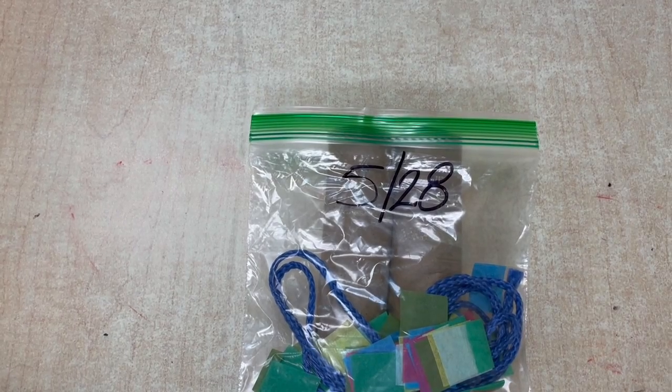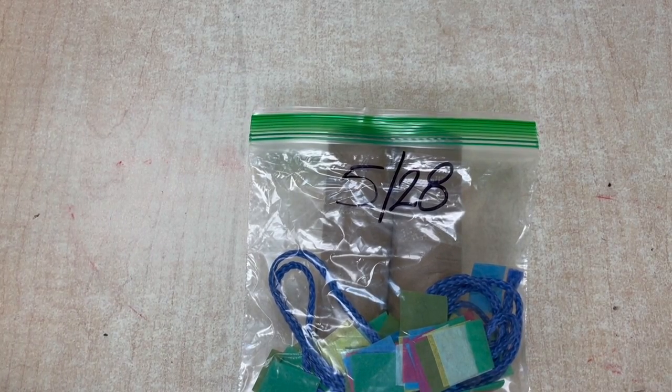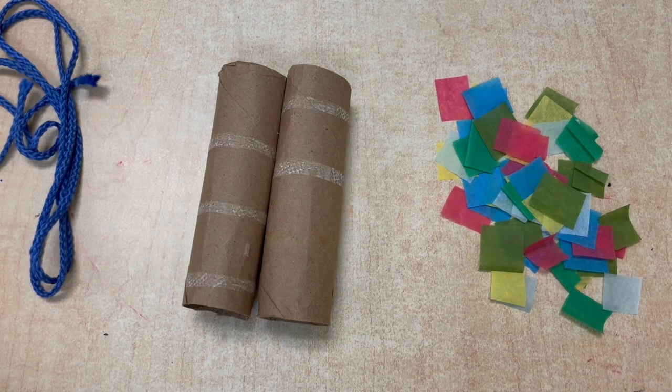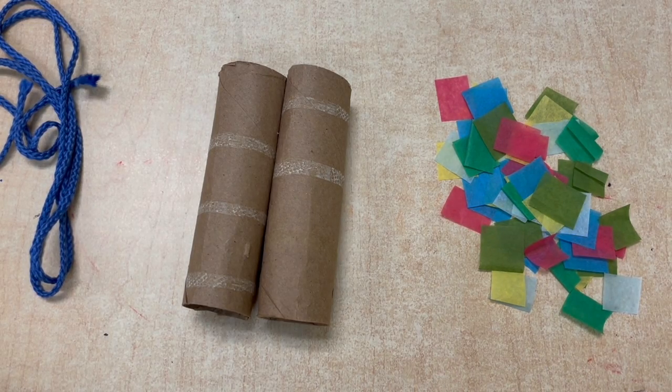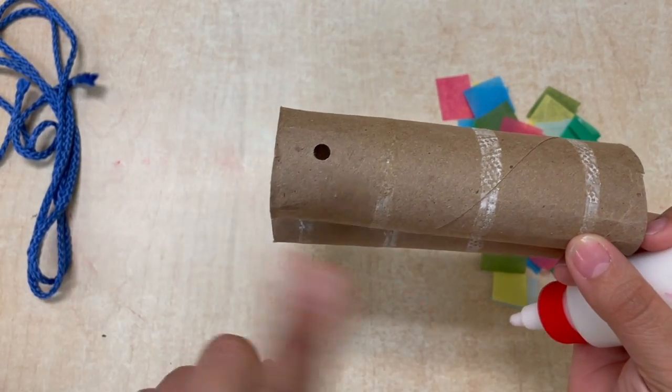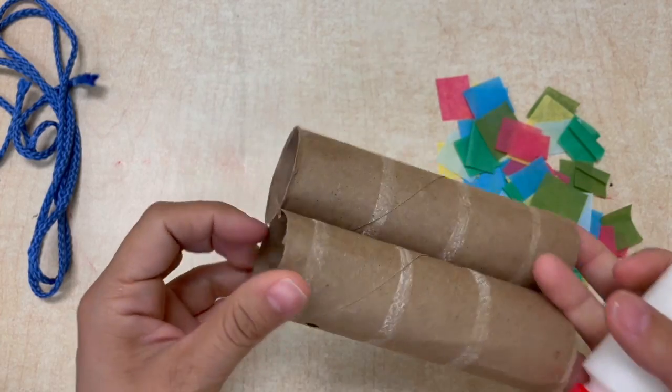Hi friends, today we are going to make binoculars so we can bird watch. First thing, take everything out of your bag. You're gonna need some glue so that you can glue on the little tissue papers. Make sure you don't put glue in the holes. There's two holes, one on each side.